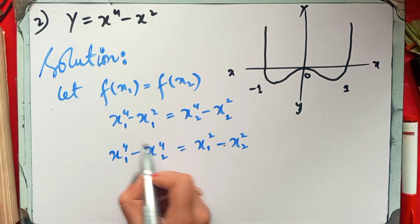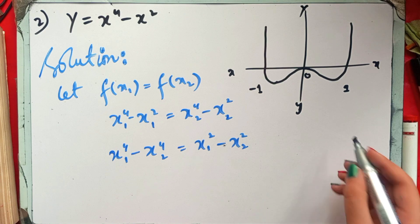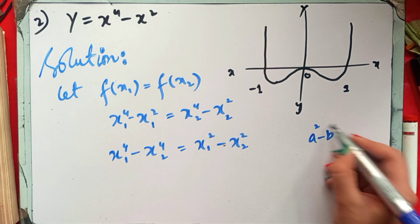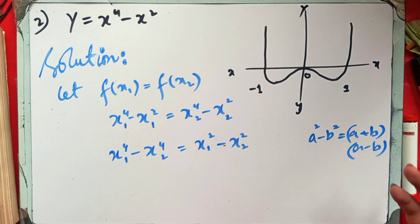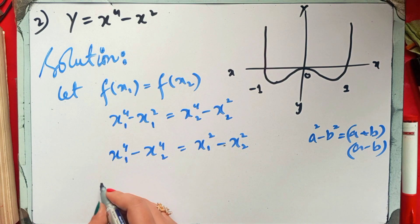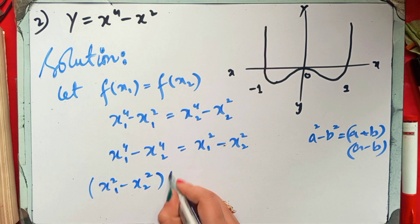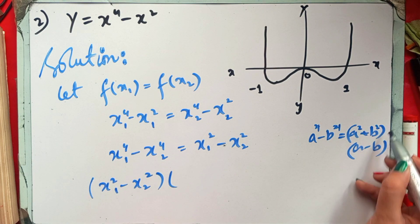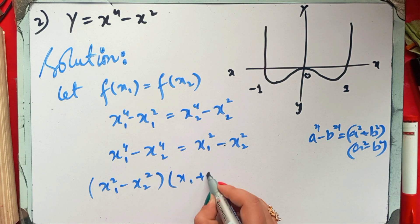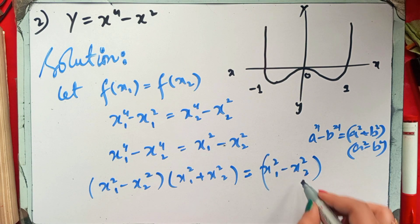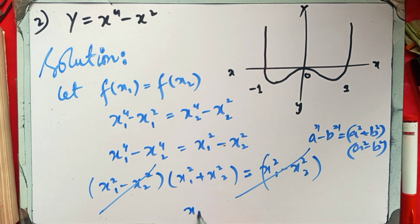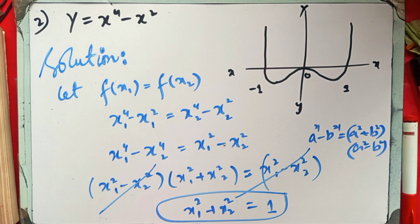We can use the a-minus-b formula: a² - b² = (a+b)(a-b). Applying this, we factor out (x₁² - x₂²), giving (x₁² - x₂²)(x₁² + x₂² - 1) = 0. The minus terms cancel, leaving us with x₁² + x₂² equal to 1 as a possible case. This means x₁² = x₂² does not necessarily imply x₁ = x₂.